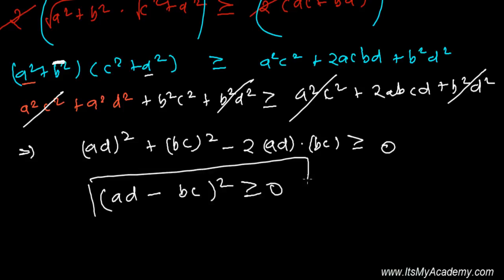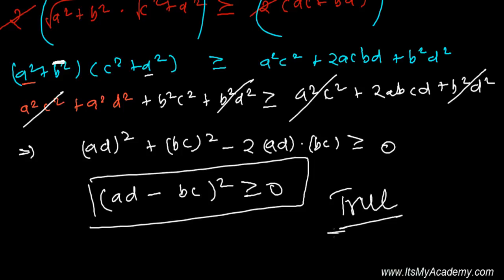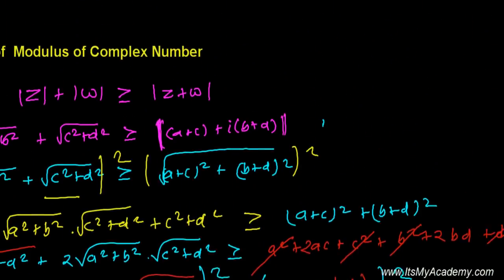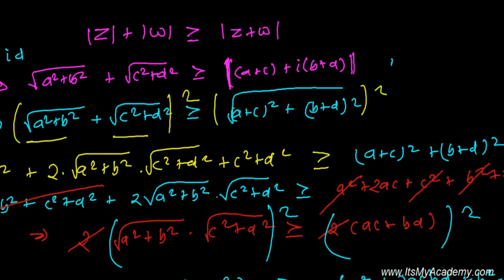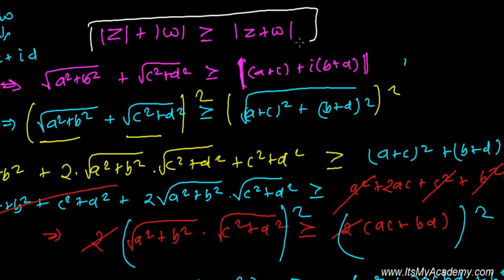And of course, the square of any number — whether positive or negative — is always greater than or equal to zero. This is 100% true, which confirms that our original inequality is also 100% true.